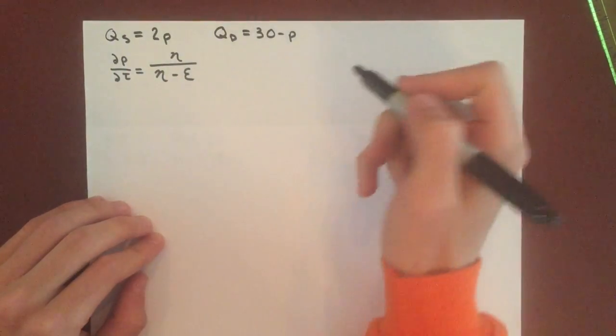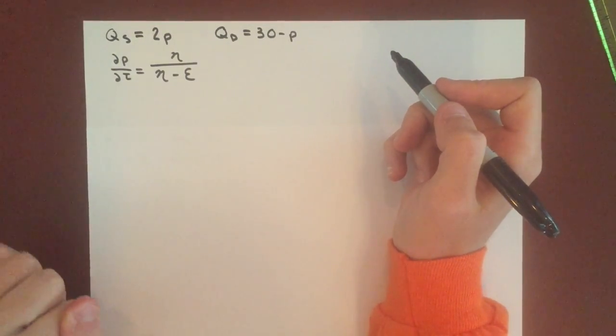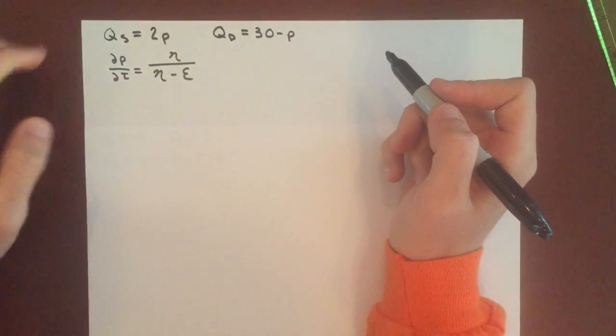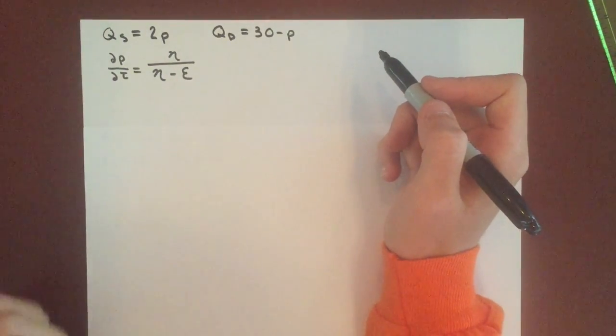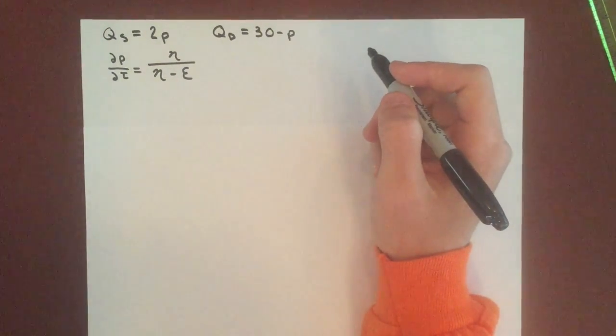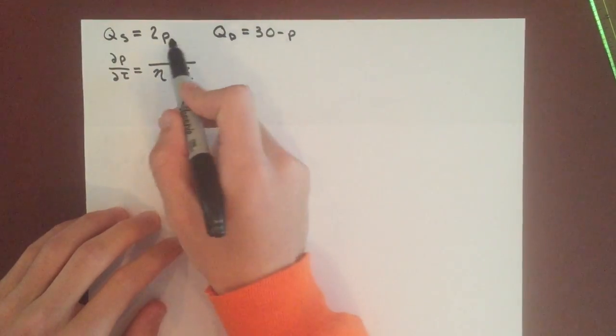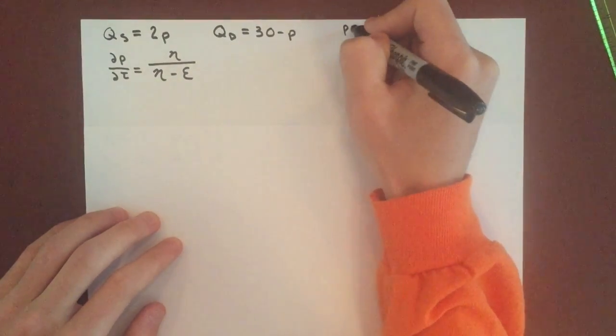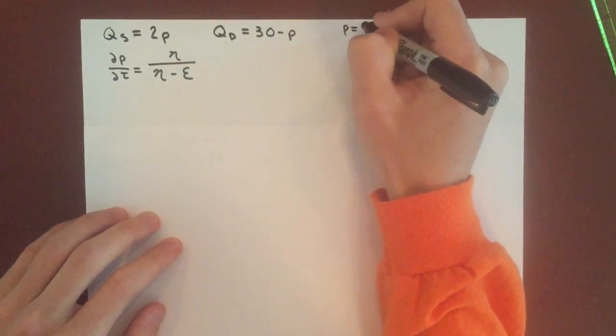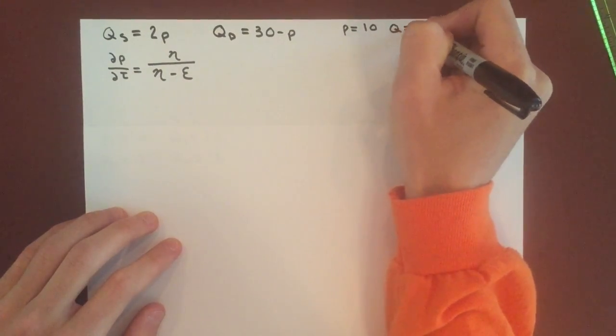Finding elasticity of supply is exactly the same as elasticity of demand, except you take it of the supply curve instead of the demand curve. We actually had these two equations last video, and we found that the equilibrium price is 10 and the quantity is 20.